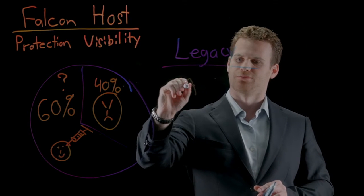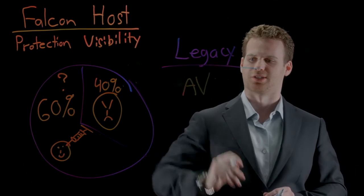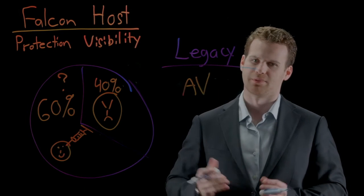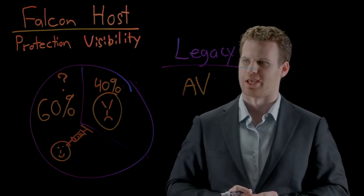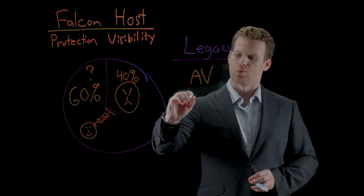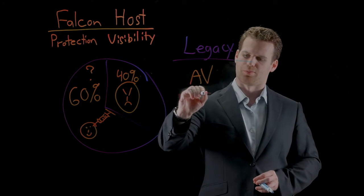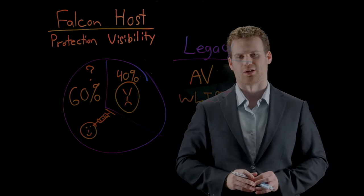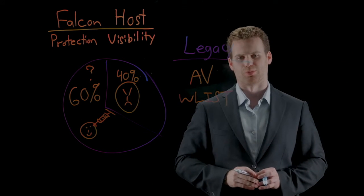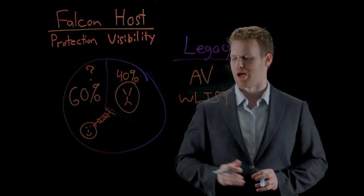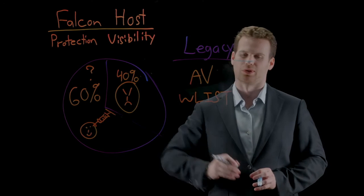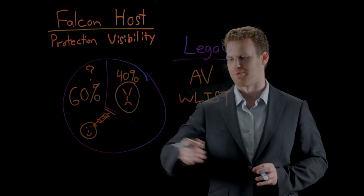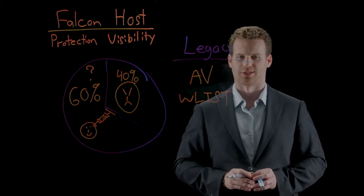First, we've got antivirus, which is really just designed to look for signatures of known malware. Of course, in our situation today, there's no malware to look for — it's nothing for AV to pick up on. Whitelisting is another approach that tries to make a list of all good processes on a machine and prevents unknown processes from executing. The problem is we're only relying on built-in operating system executables, and if we try to stop those from running, we might crash the operating system.